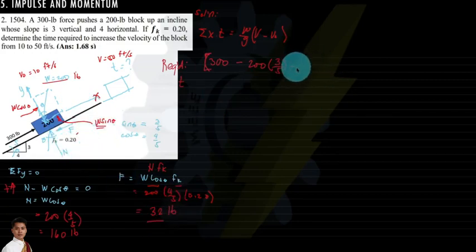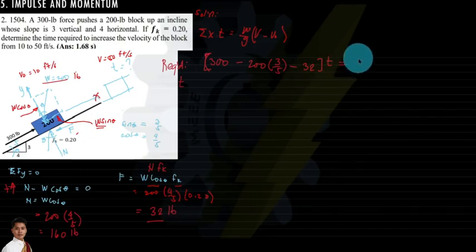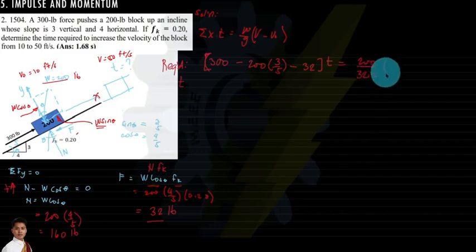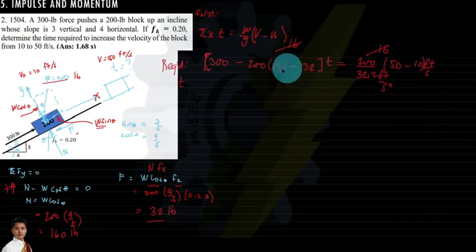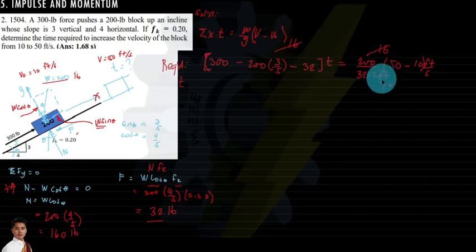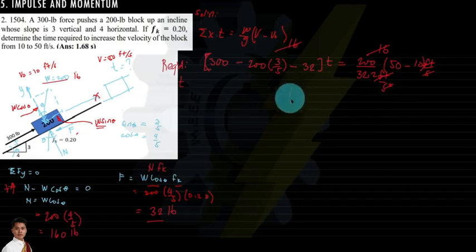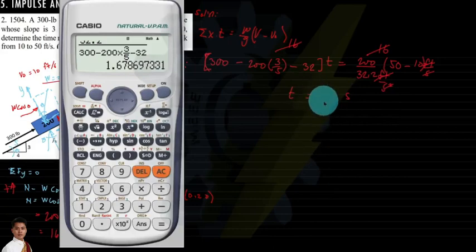Continuing the calculation: the time t equals (200/32.2) times (50 minus 10) divided by the net force along x. Unit analysis confirms pounds cancel and the remaining unit is seconds. Solving gives t equals 1.68 seconds.